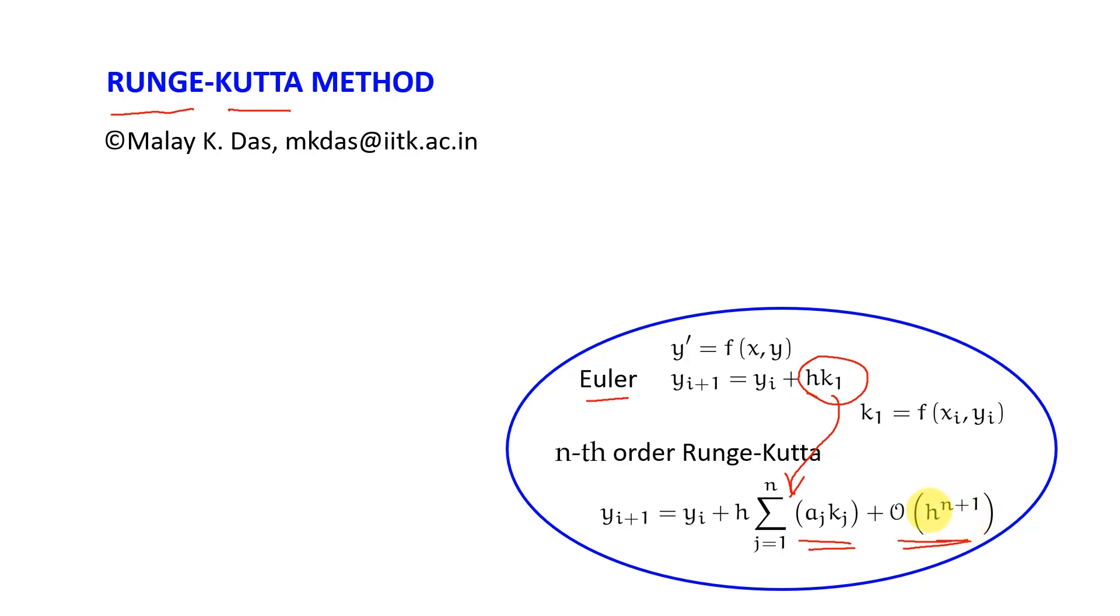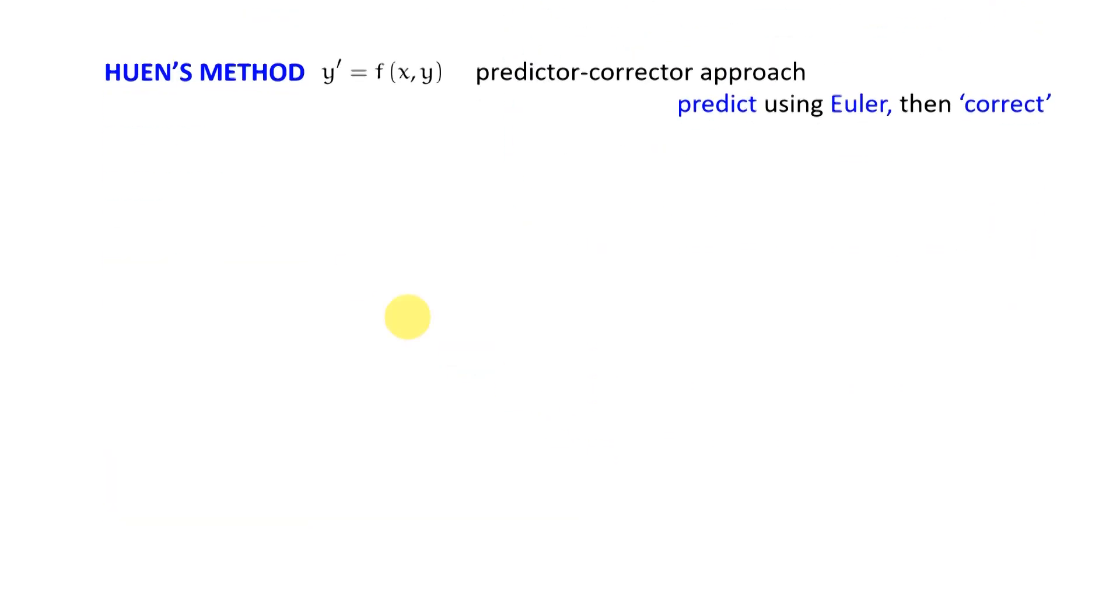Let us see how this method works. First we'll take up Huen's method, which is the second order Runge-Kutta method. Once again this is a predictor-corrector type approach, so we predict the solution using Euler and then we correct it.